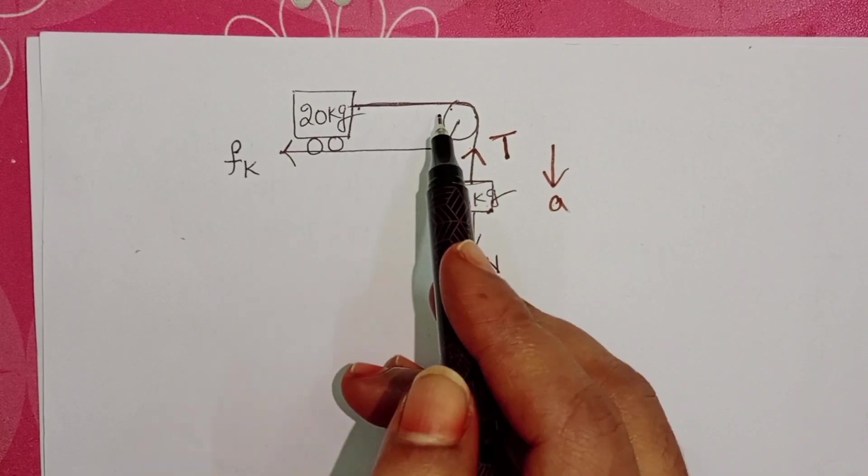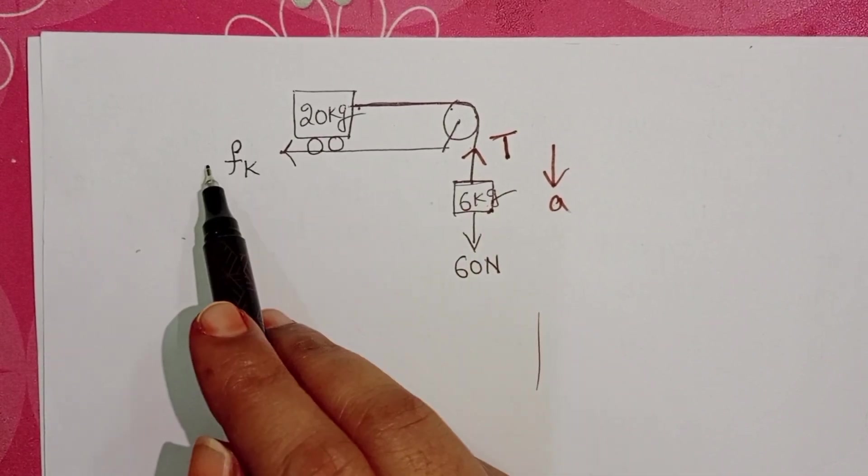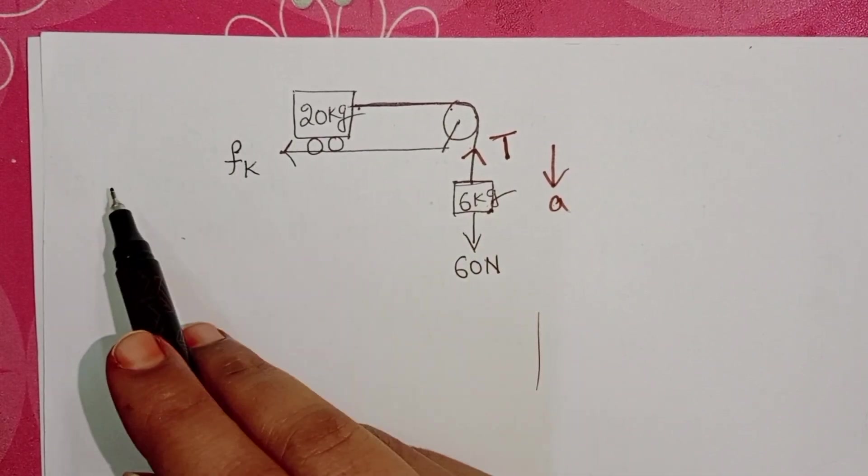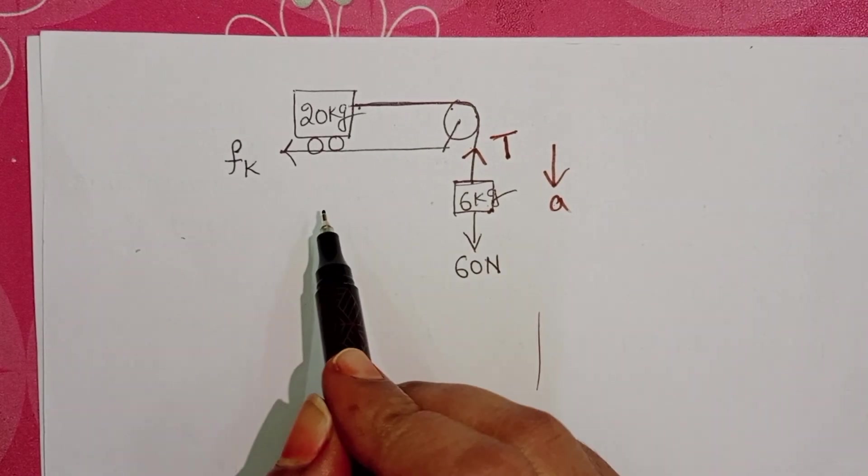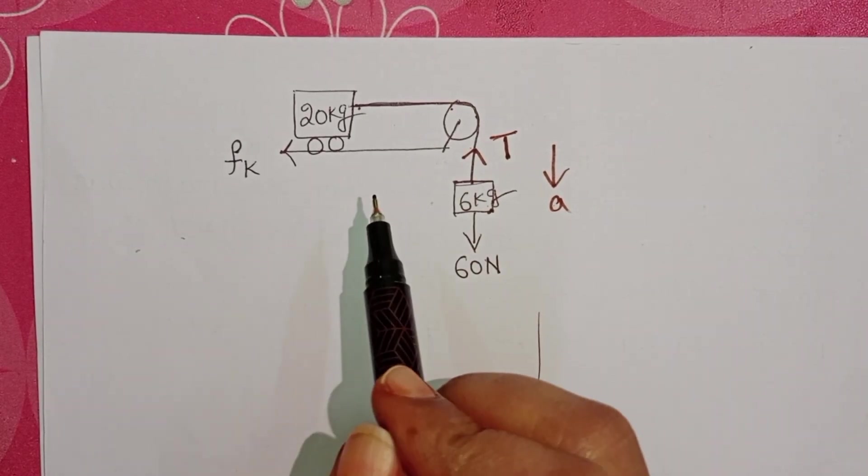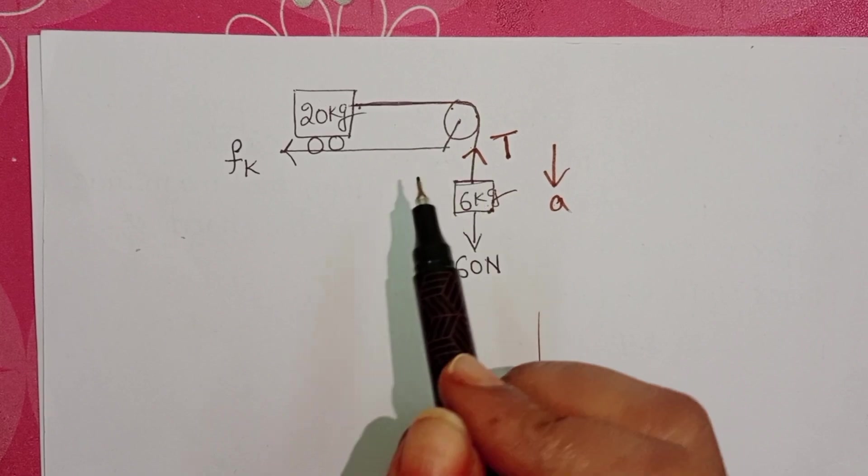Whenever this trolley is in motion, kinetic friction exists in the opposite direction. By using this information, we have to find out the acceleration of the system.